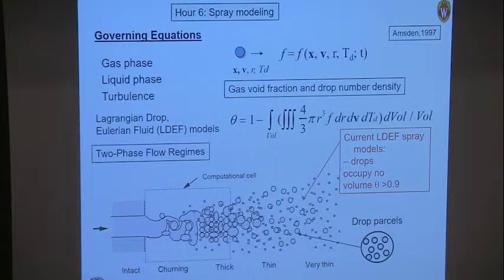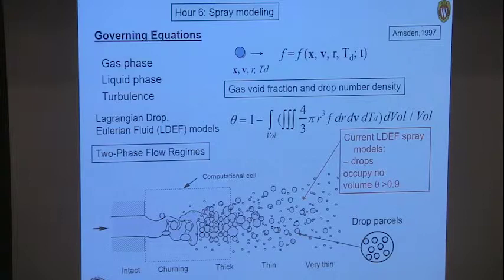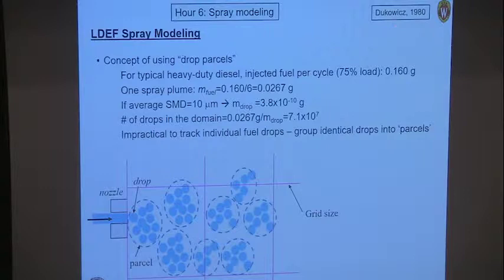In a typical spray, you have many, many droplets, so tracking each one is very difficult. That's where the idea of grouping droplets together into parcels makes a lot of sense. This was introduced by John Dukovic in the 1980s and basically made it possible to do simulations of sprays.